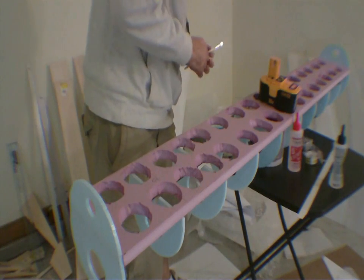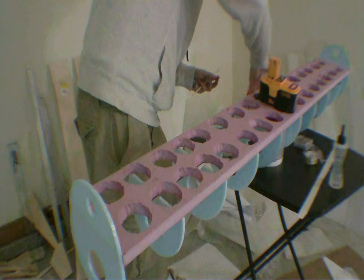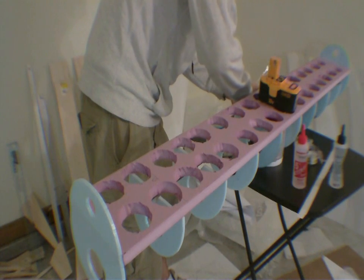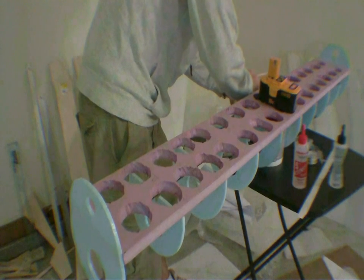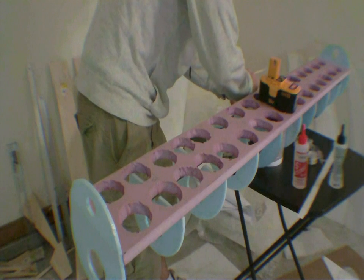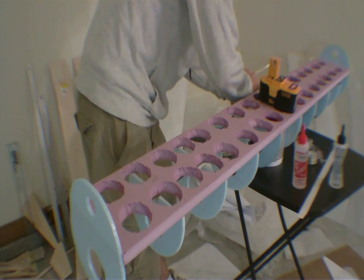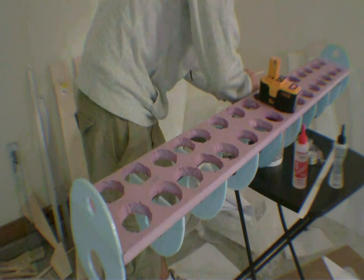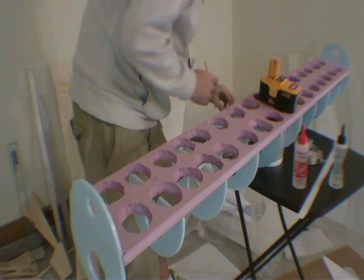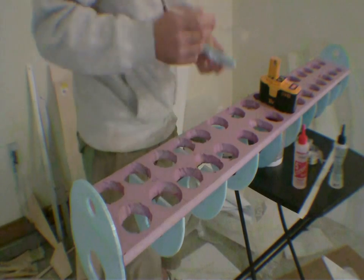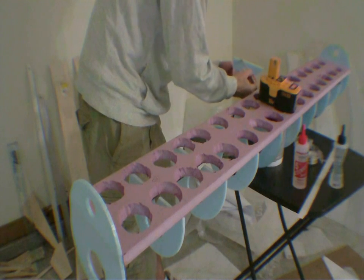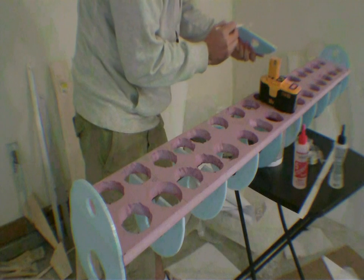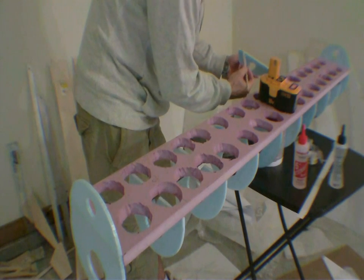Two-part epoxy. Let's mix up some epoxy. Mix it up. I'm applying the epoxy to the bulkhead, to the bottom piece of the bulkhead.